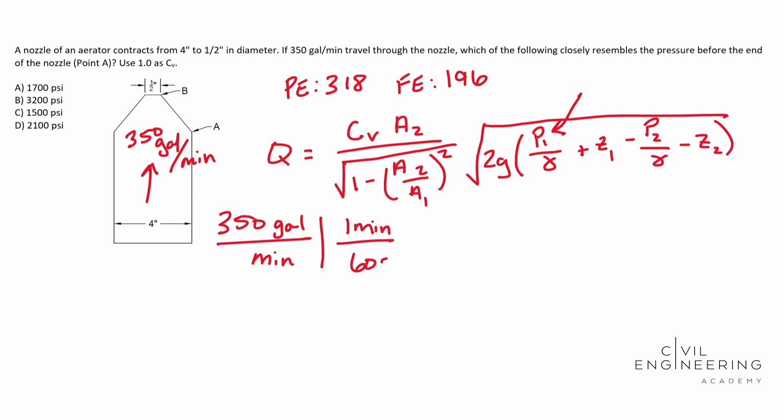And then we can convert our 350 gallons to cubic feet. So there are 7.481 gallons for every cubic foot. And so if you multiply that stuff out, you'll end up with 0.78 cubic feet per second.